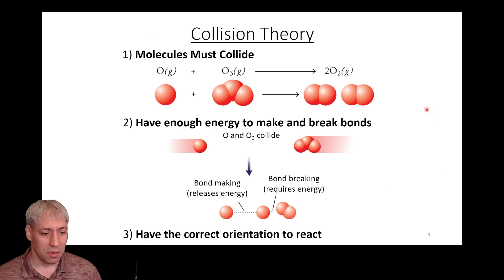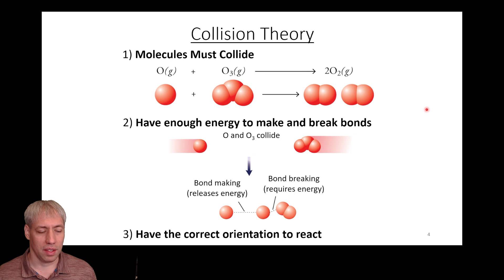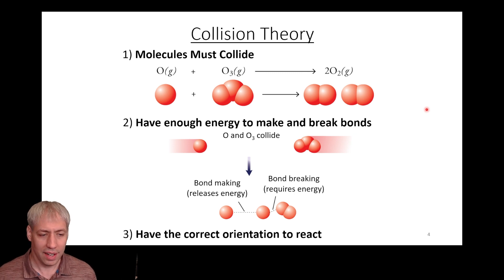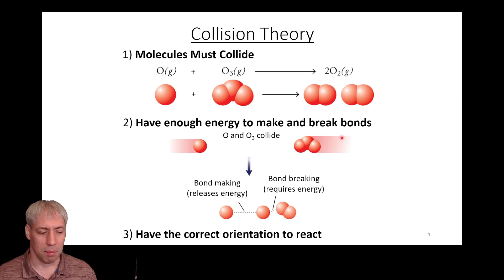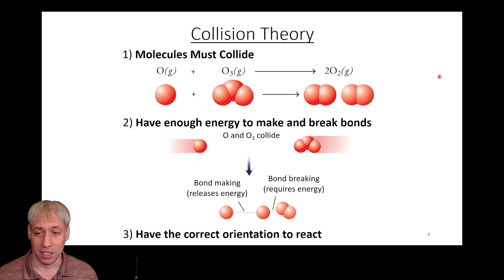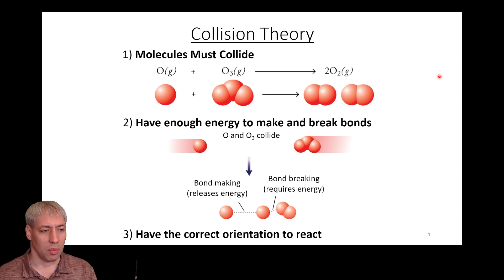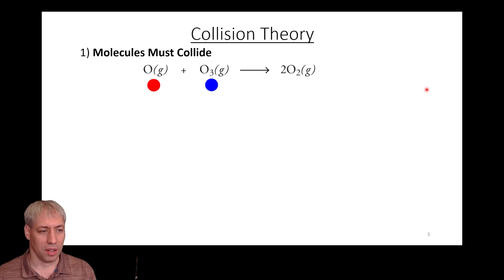Collision theory says you need three things for a reaction to occur: molecules must collide, they must have enough energy to make and break bonds, and they must have the correct orientation to react. We're going to go through each one individually, starting with molecules must collide.